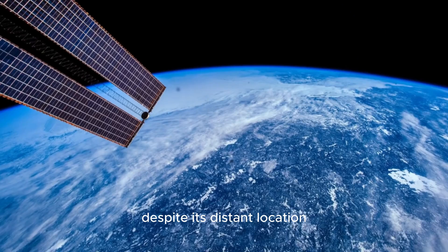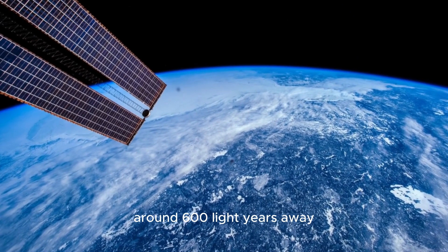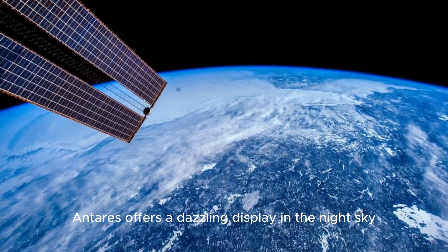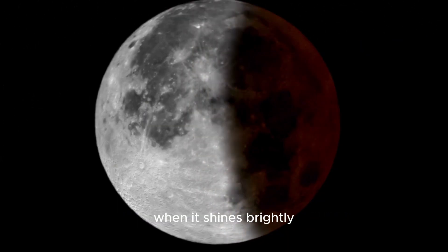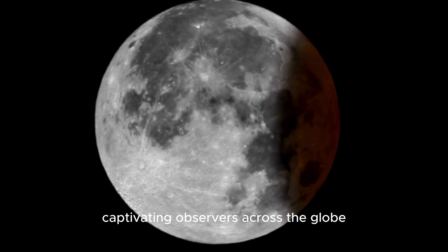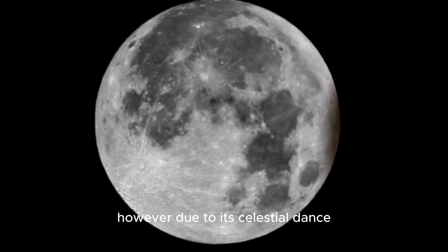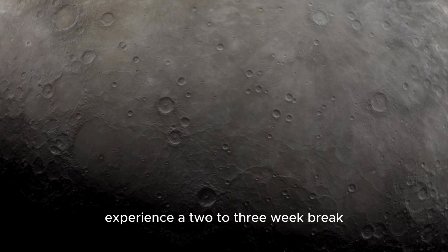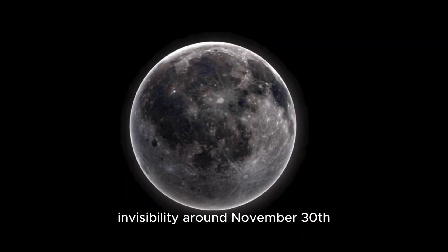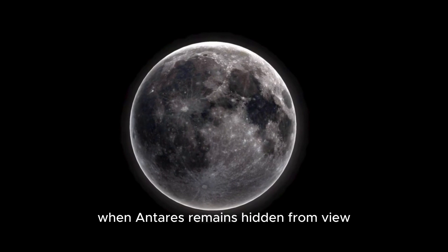Despite its distant location around 600 light-years away, Antares offers a dazzling display in the night sky, particularly around May 31 each year when it shines brightly, captivating observers across the globe. However, due to its celestial dance, observers in the northern latitudes experience a two-to-three-week break in visibility around November 30, when Antares remains hidden from view.